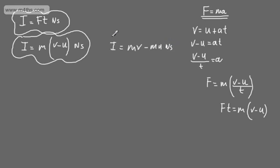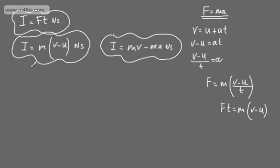We'll see shortly how this links with momentum. So there is impulse, defined as force multiplied by time, or the mass multiplied by final velocity minus the initial velocity.